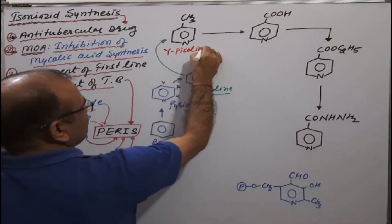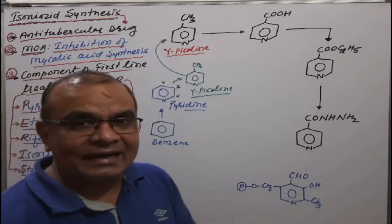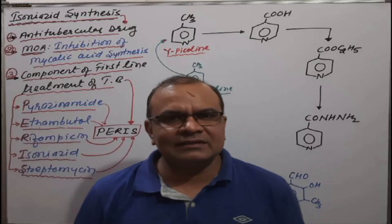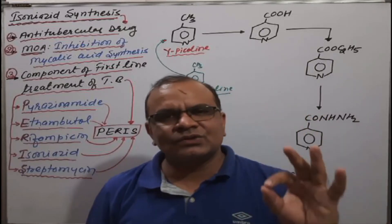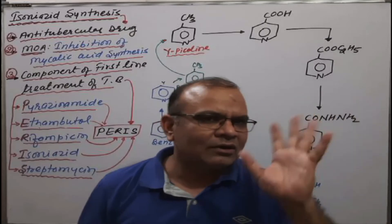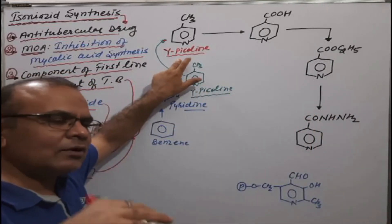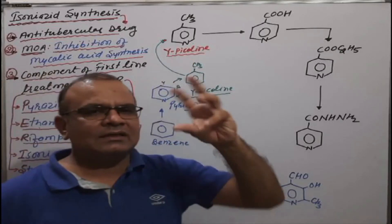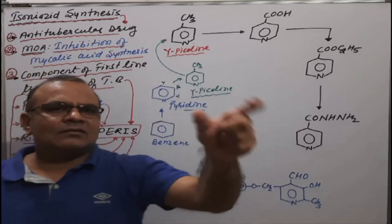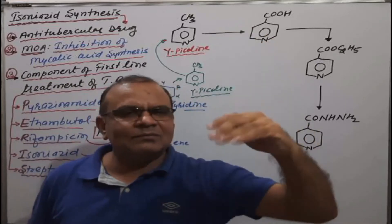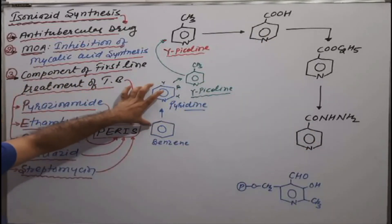The starting material — gamma-picoline — is asked about many times in competitive exams, especially GPAT and drug inspector exams. Many students are not able to understand or recall the structure of gamma-picoline. The gamma position refers to the C4 position of the pyridine ring, with alpha at C2 and beta at C3.